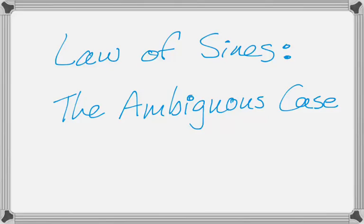In this video we're going to talk about the ambiguous case of the law of sines. The ambiguous case is when you have an angle, the side opposite that angle, and some other side. It's ambiguous because in that situation you could get no triangles, one triangle, or two triangles. There's a lot of stuff going on.